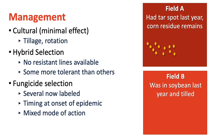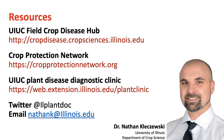For fungicide selection, there are several products labeled now. You want to time these at the onset of an epidemic, so scouting is going to be essential. If you've got this disease starting anywhere before R3, you might consider a fungicide application, and you'll want something with a mixed mode of action. There are several resources available for tar spot management recommendations and updates. You can contact me via email or Twitter, and you can send samples to the diagnostic clinic if you think you have tar spot. Thank you, and have a great day.